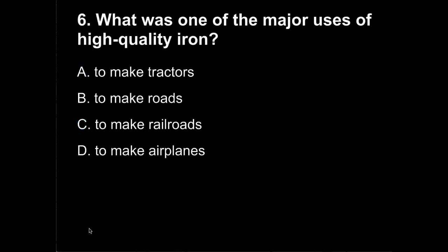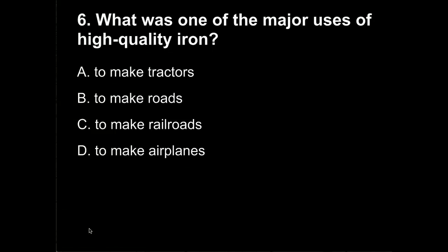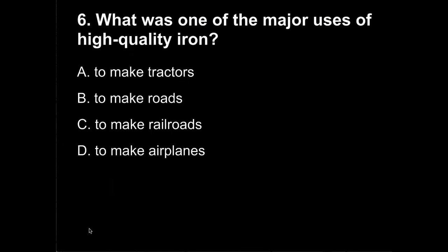Question 6. What was one of the major uses of high quality iron? Was it A, to make tractors? B, to make roads? C, to make railroads? Or D, to make airplanes?